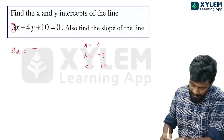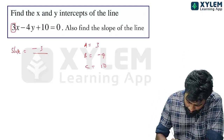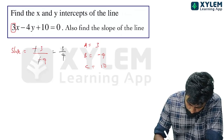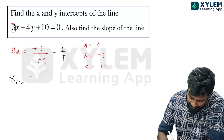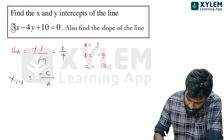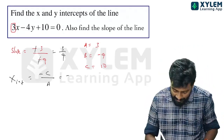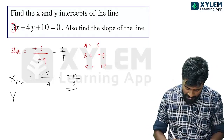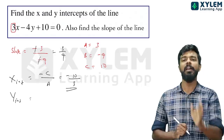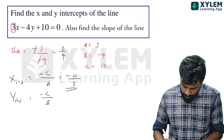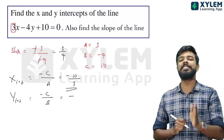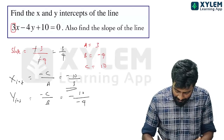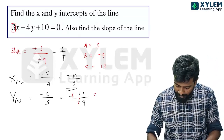So the answer is: slope is 3 by 4. x-intercept is minus c by a, so the answer is minus 10 by 3, since c is 10 and a is 3. Finally, y-intercept is minus c by b, that is minus 10 divided by minus 4, and negative over negative is positive, so the answer is 5 by 2.